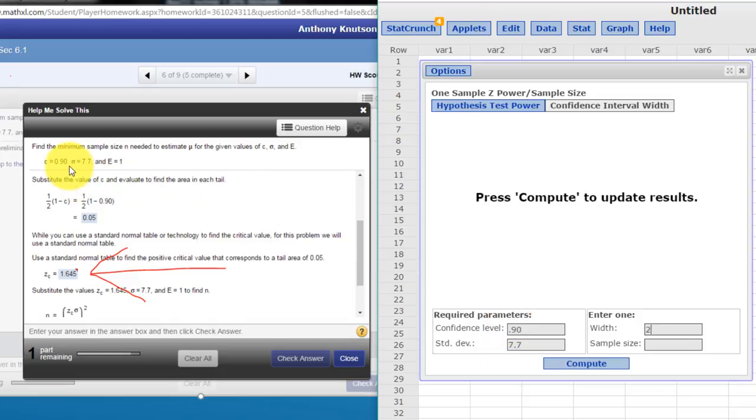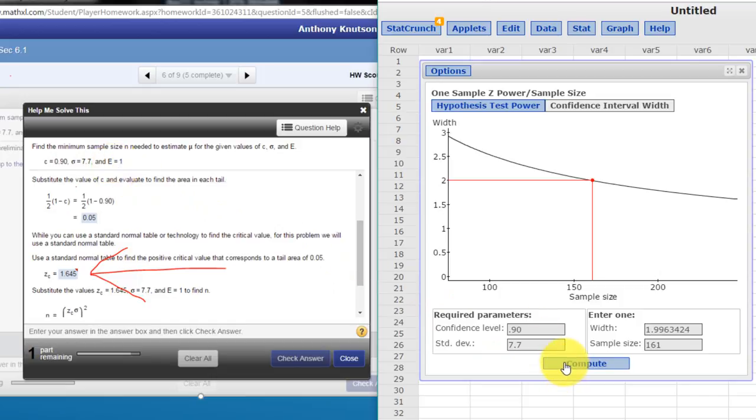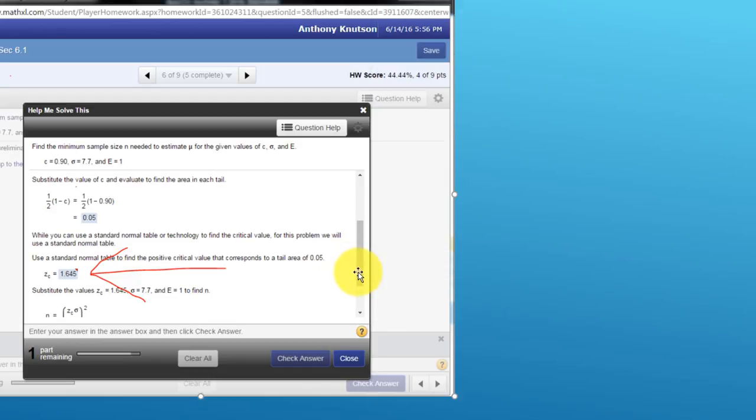And double check I've got 0.9 for my confidence, 7.7 for my standard deviation, and a width of twice the margin of error, 1, compute, and we get a sample size required of 161. And I think that is the answer that you got.